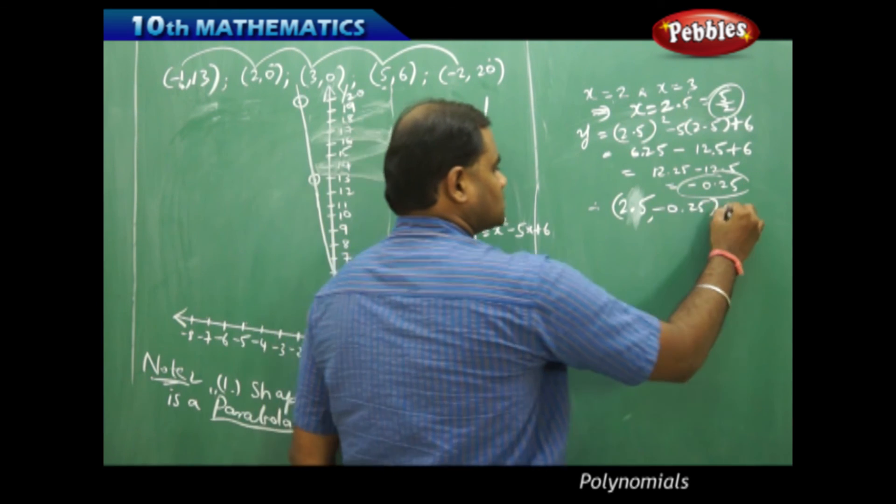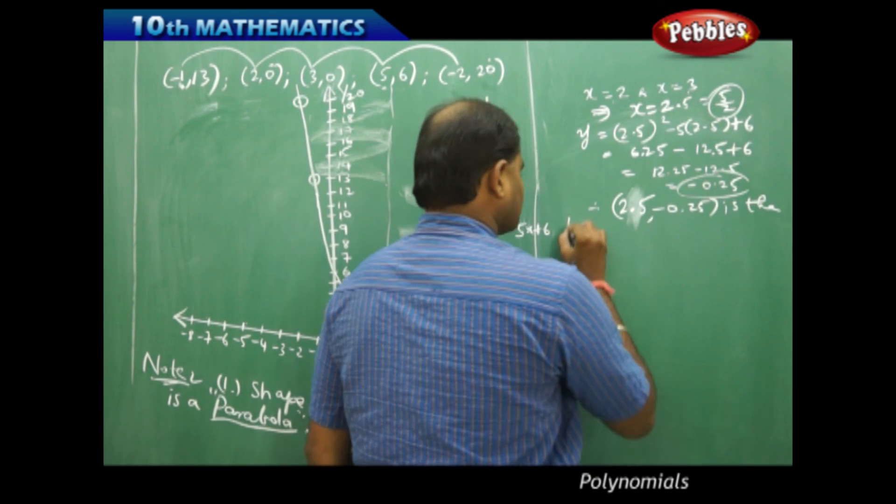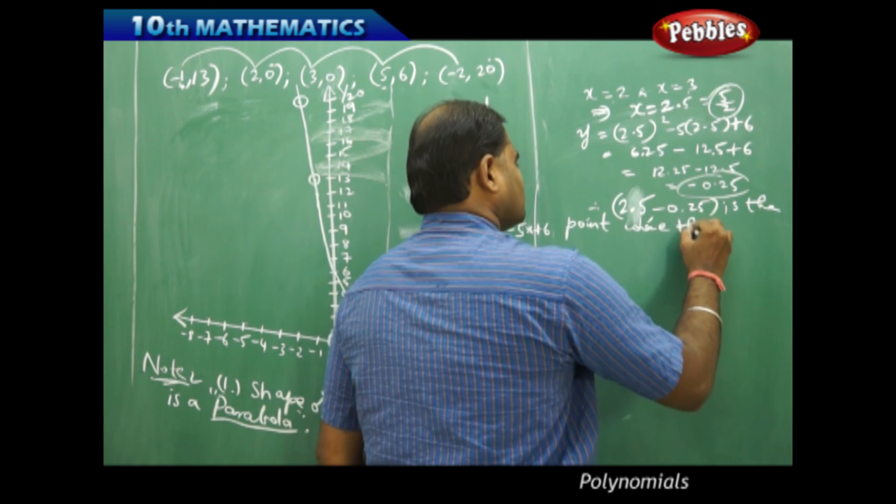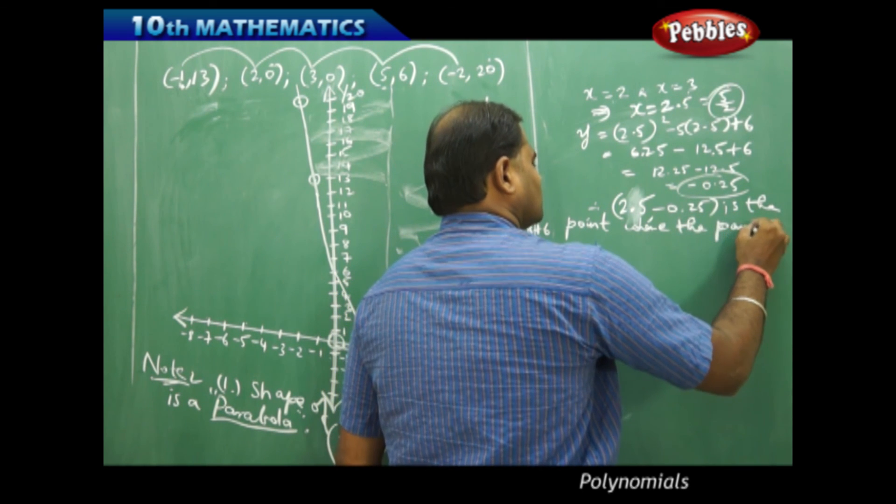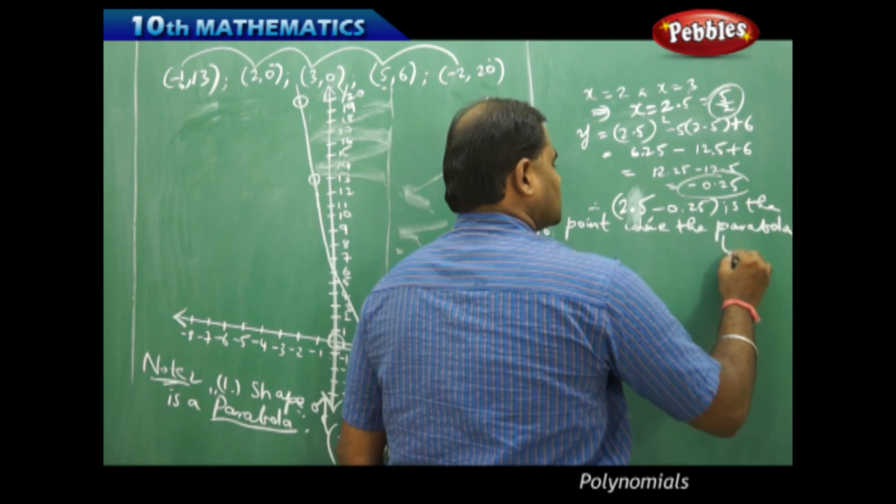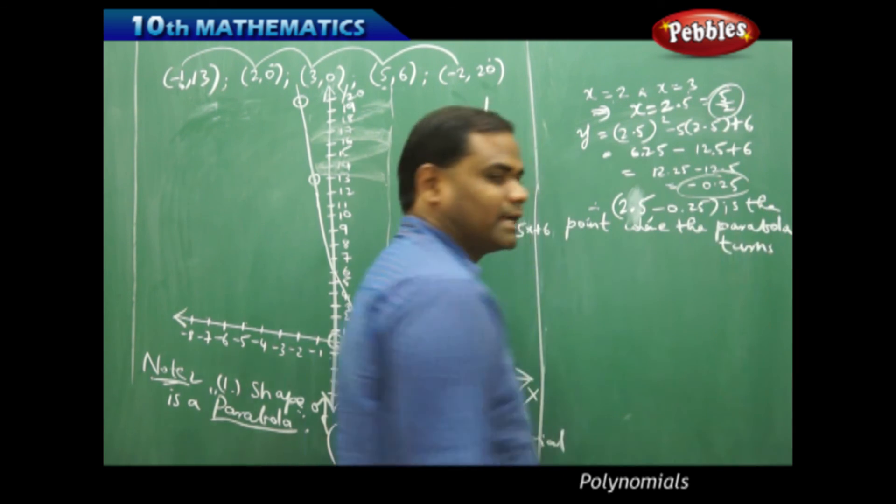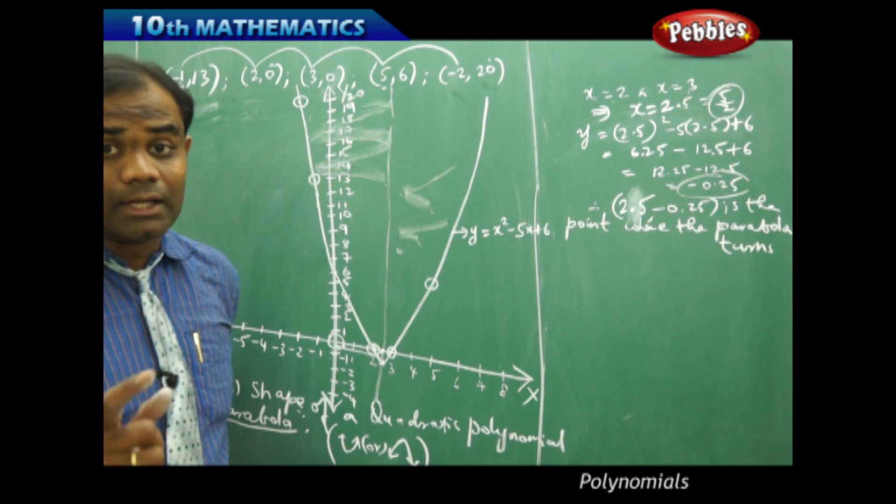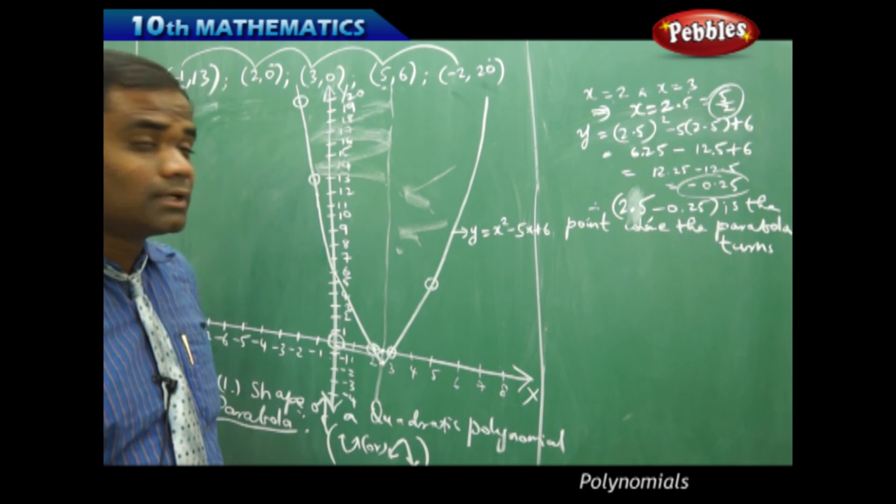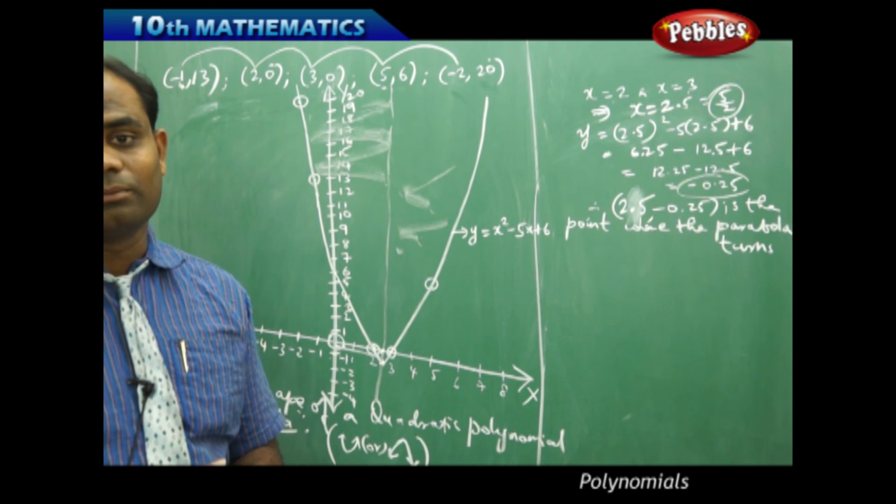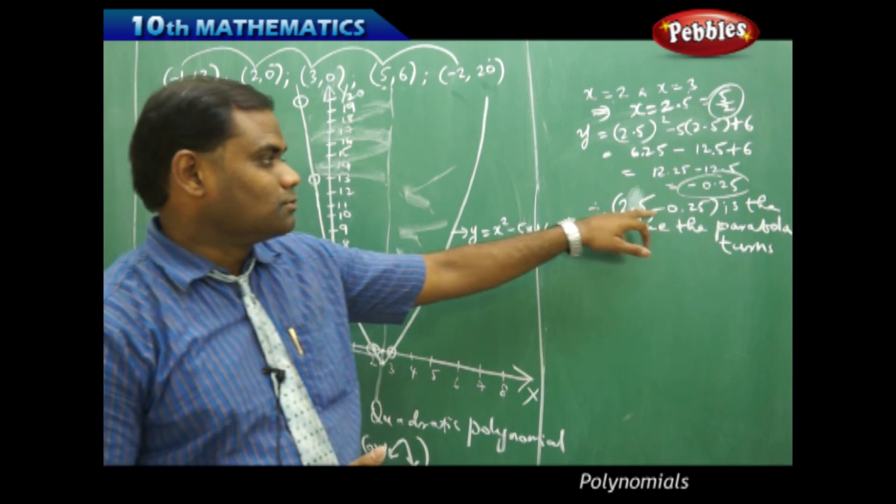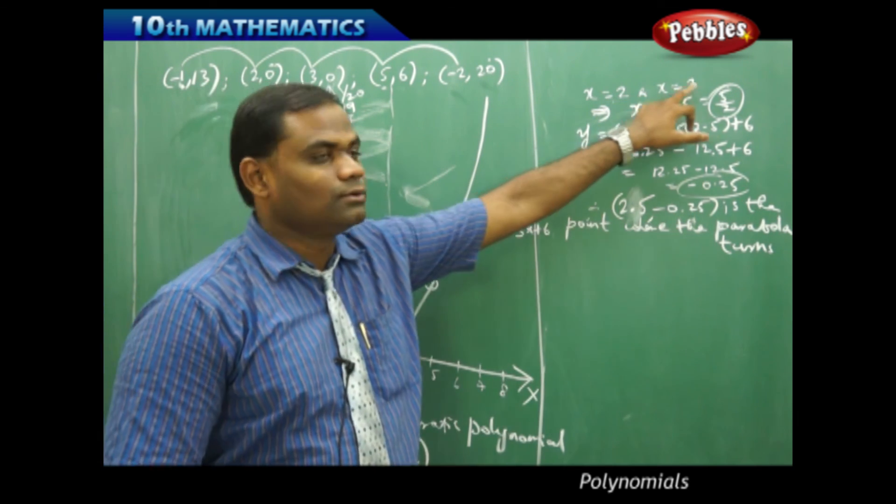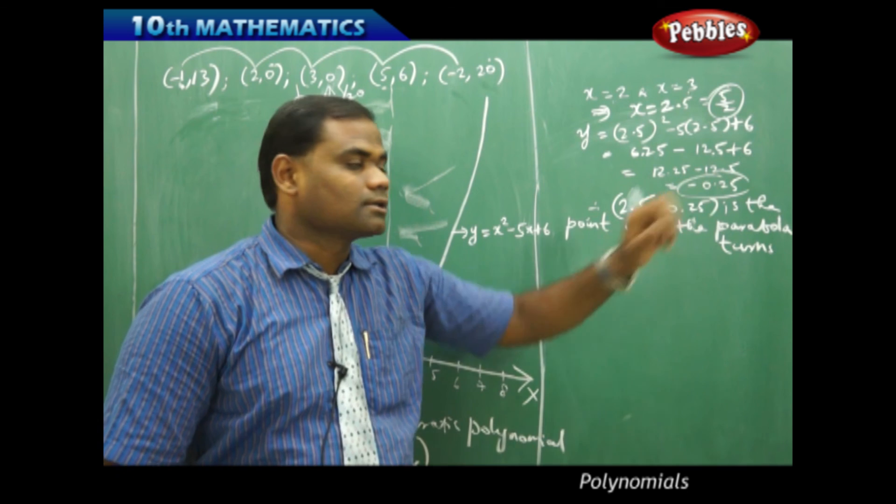Therefore, this is the point where the parabola turns. Exactly, it turns, takes a u-turn on to the other side, is how we can understand the graphical concept of a quadratic polynomial. The turning point, which we call this as, can also be formed by taking the middle value of the x-intercepts and finding the corresponding y.